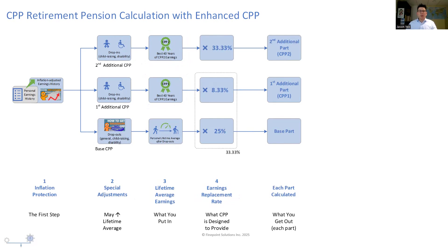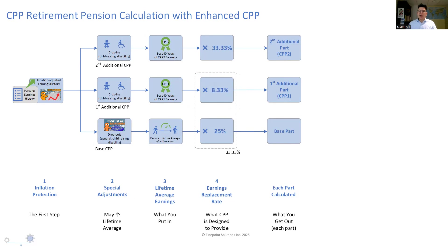The extra contributions into the first additional CPP buy you an additional 8.33% of earnings replacement on your earnings up to the original threshold. The earnings replacement rate is increasing from 25% up to 33.33%. So what the base CPP plus the first additional CPP do together is provide a combined 33% of earnings replacement on your earnings up to the original earnings threshold.